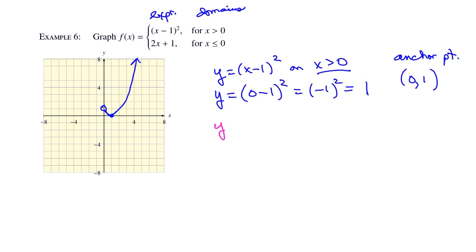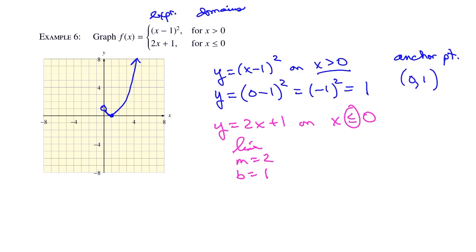Next, y equals 2x plus 1 for x less than or equal to 0: a line with slope 2 and y-intercept 1. Since it includes the equality at x equals 0, the anchor point 0 comma 1 fills in — a solid dot. So these two pieces meet at 0 comma 1, unlike the previous example which had a gap. Together we have one function: it starts as a line and then turns into a parabola.